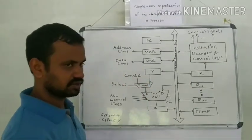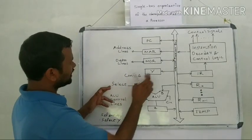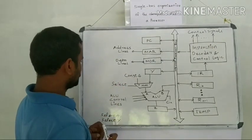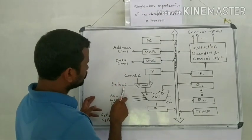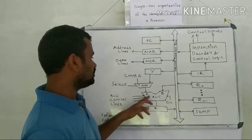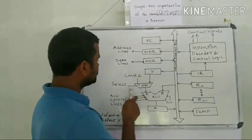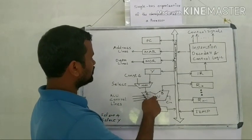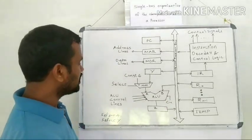Then to select either Y or constant 4, there is a select component. Whenever the value of the select control line is equal to 0, then constant 4 will be selected as the A input. And when the value of the select line is equal to 1, then the Y register content will be selected as the A input.